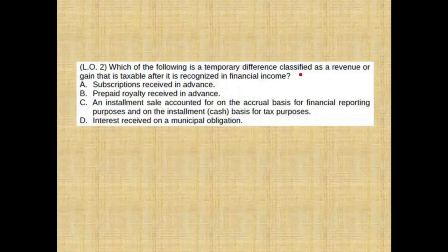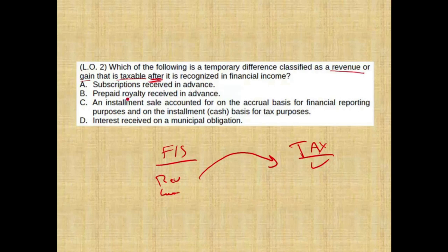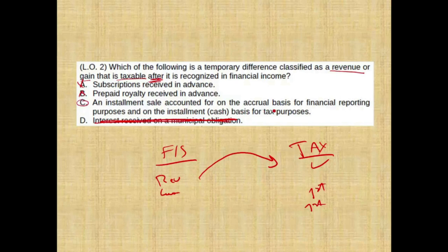Which of the following is a temporary difference classified as a revenue or gain that's taxable after it's recognized on the financial statement? So it's recognized on the financial statements first, then taxed later. Subscription received in advance — it's taxed first when you receive the money, so that's out. Prepaid royalty received in advance — same concept, taxed first, out. Interest received on municipal bonds — that's a permanent difference, out. Therefore the answer is C: an installment sale accounted for on the accrual basis for financial reporting purposes. On the accrual basis you debit accounts receivable and credit revenue, but for tax purposes you use the installment method, meaning you don't pay taxes until you receive the cash.